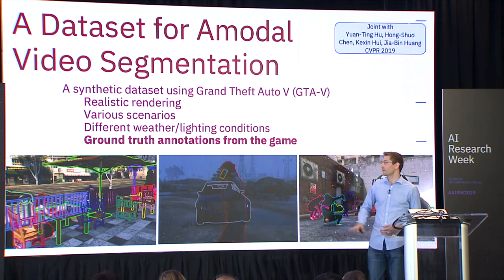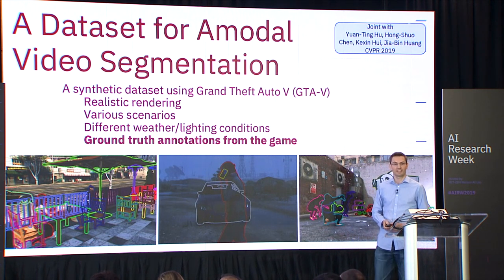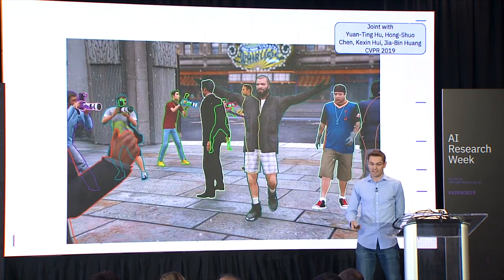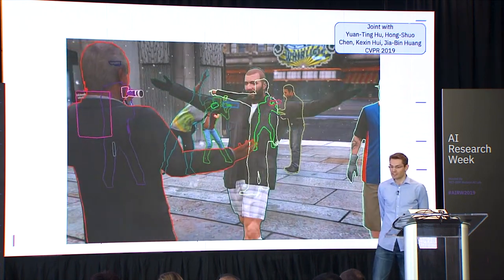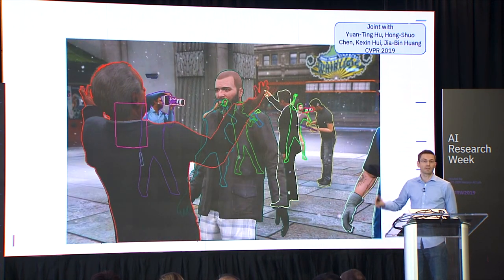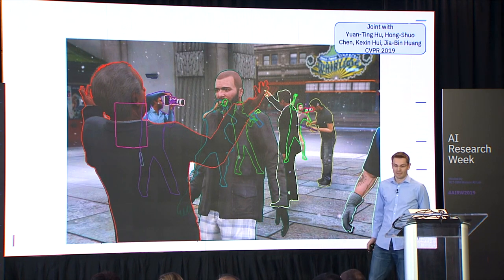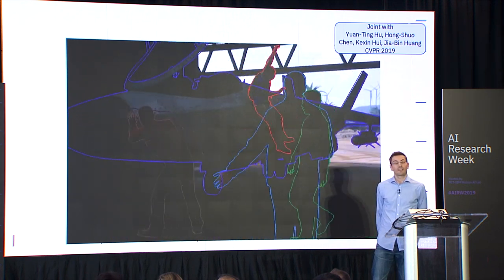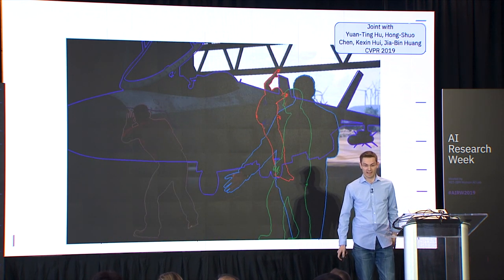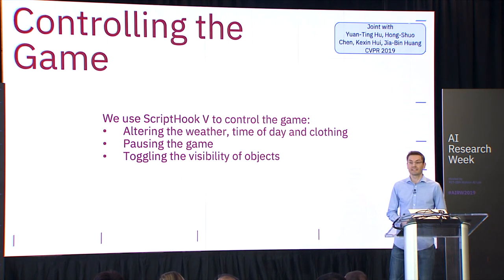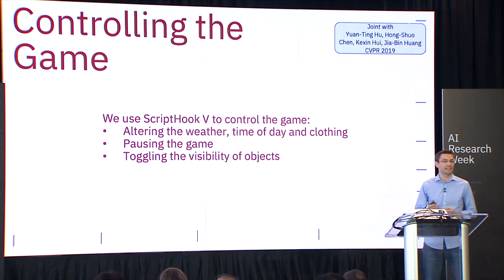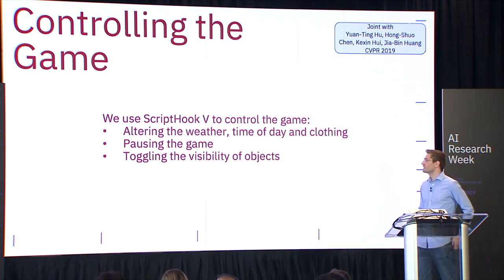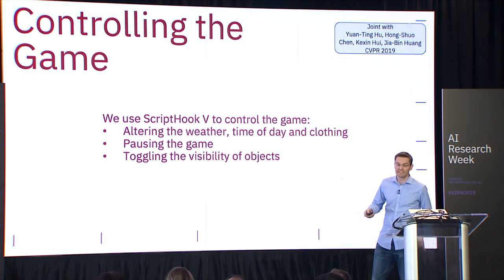The pipeline: initialize the game randomly, choose settings, play for a while, then pause. Grab the image rendered to the screen, images with none of the objects rendered, and images with one object at a time rendered. The problem with that naive approach is we can't compute amodal segmentation due to shadows and specular highlighting. To fix this, we place ourselves between the game and the GPU to grab information from the depth buffer and the stencil buffer, getting not only RGB images but also depth information and semantic class information.